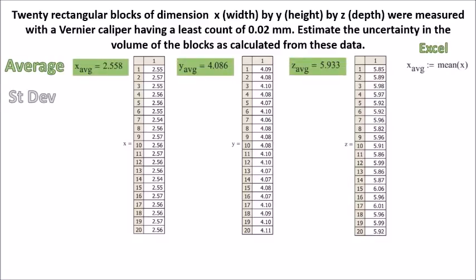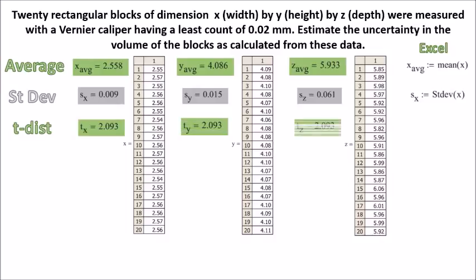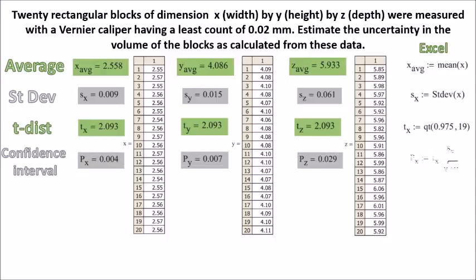Then the standard deviation. After that, the value of t distribution at 95% confidence level. Then the confidence interval.